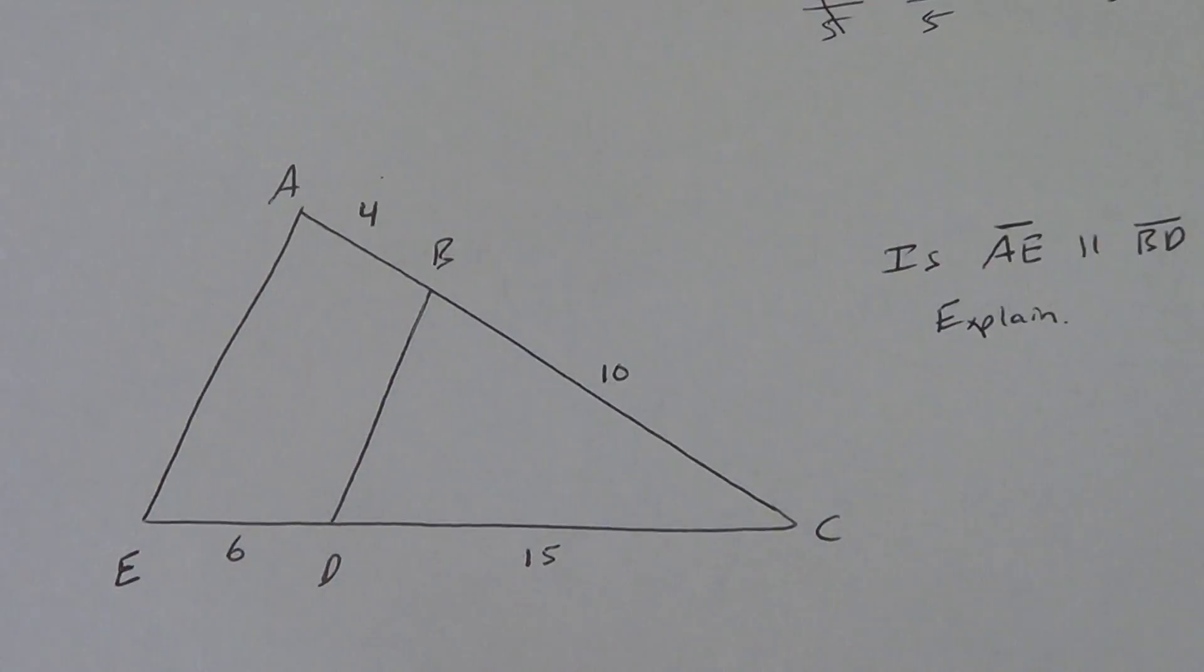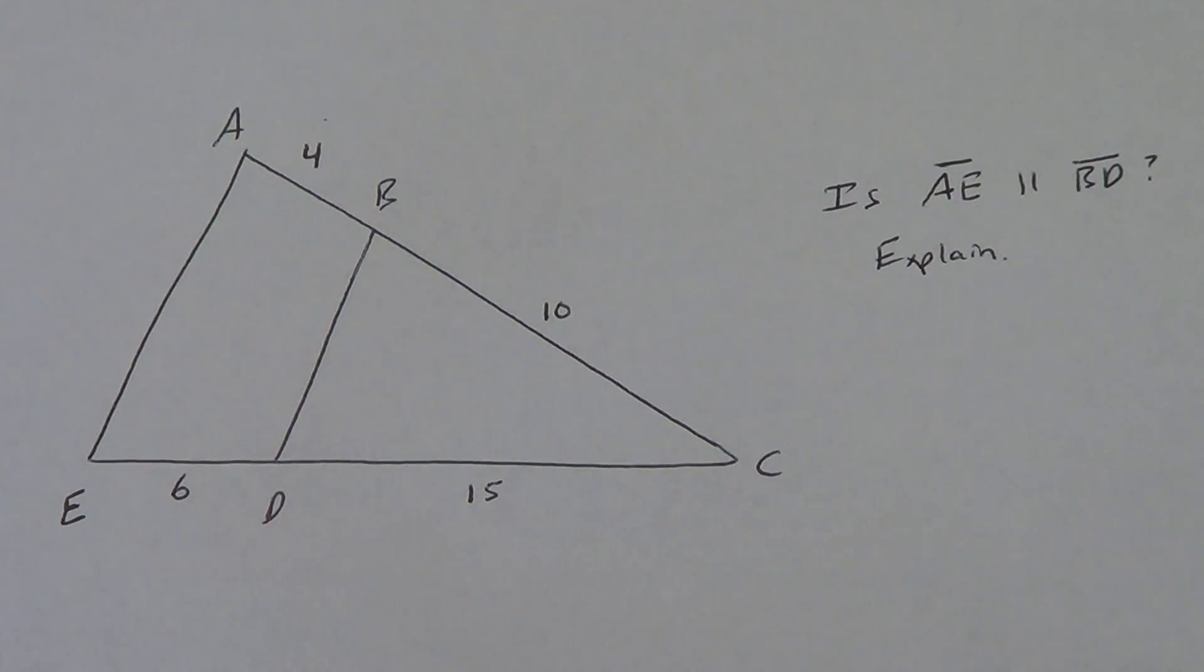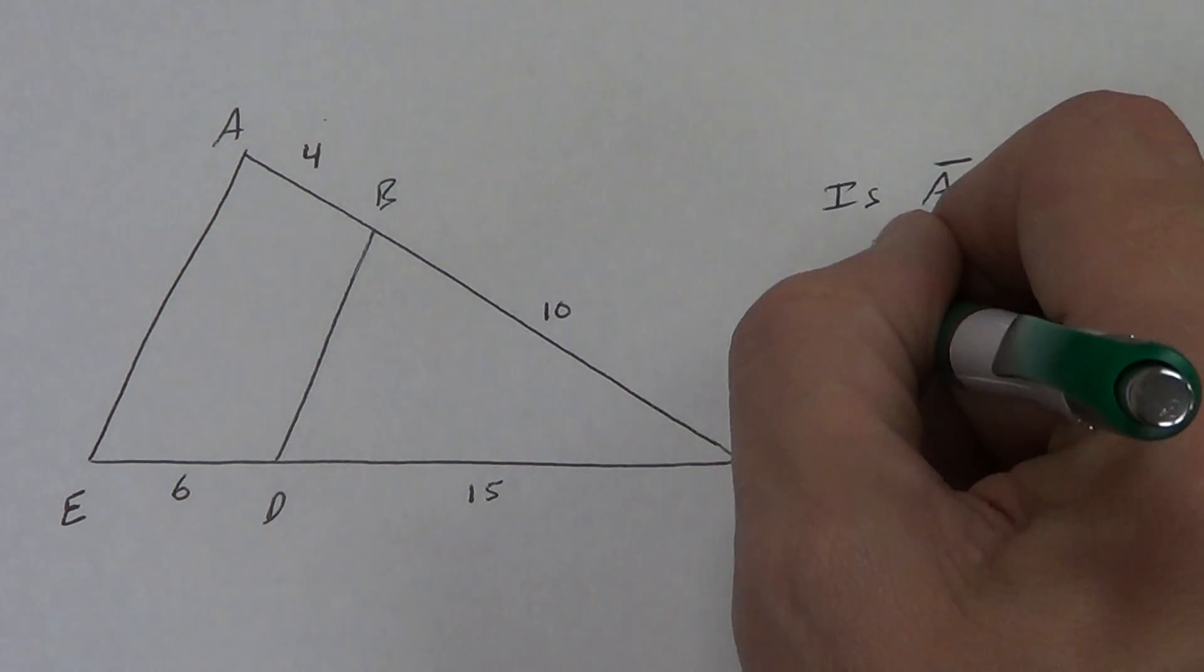Let's look at the next one. Notice this time I don't have parallel, but I gave you all the numbers. So this is that idea of the converse one we talked about back in the previous one. If I know the proportion works, then I know I have parallel lines. So copy this down.